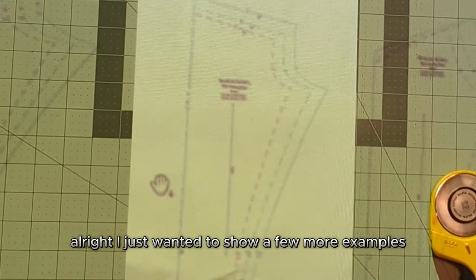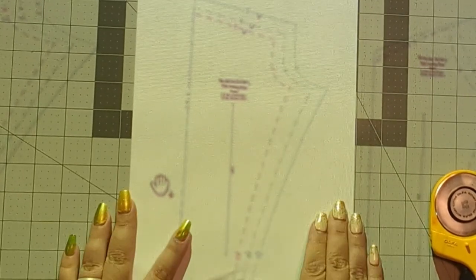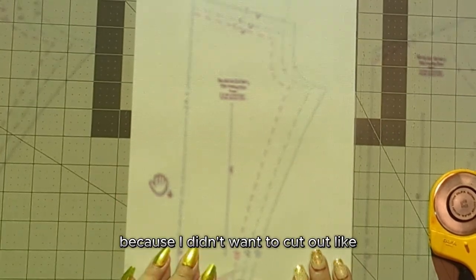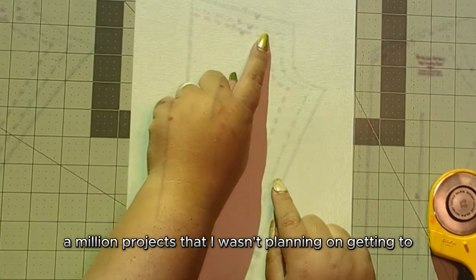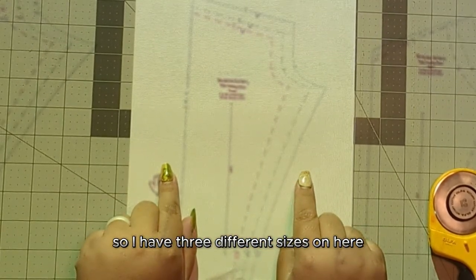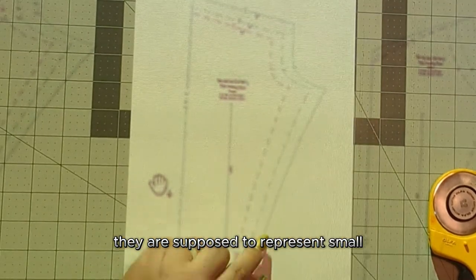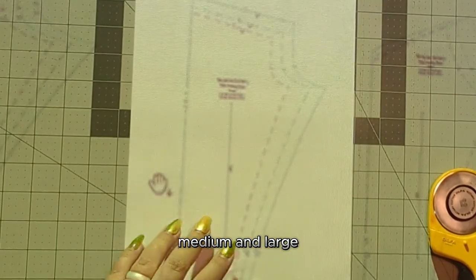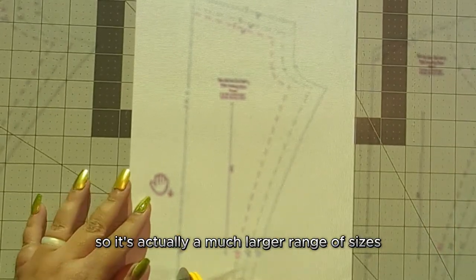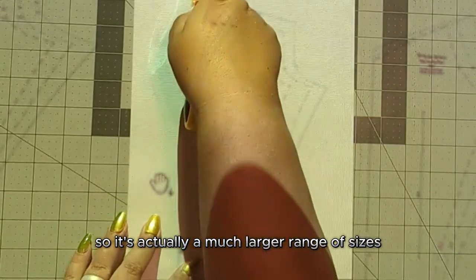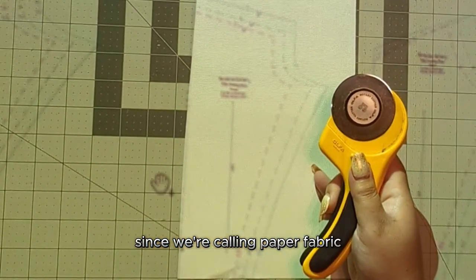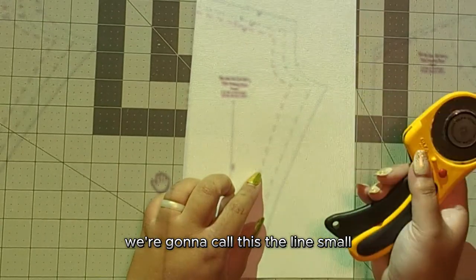All right. I just wanted to show a few more examples of grading between sizes on the fly, because I didn't want to cut out like a million projects that I wasn't planning on getting to. I'm just doing these on paper. So I have three different sizes on here. They are supposed to represent small, medium and large, but since this has shrunk down, those lines are really hard to tell. So it's actually a much larger range of sizes, but we're going to call them small, medium and large. Since we're calling paper fabric, we're going to call the line small, medium and large.